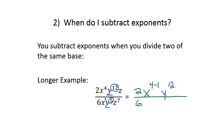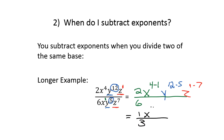That gives y to the twelve minus five. For z, we have z to the first on top and z to the seventh on the bottom — if no exponent is written it's a one — giving z to the one minus seven. The final answer: reducing two and six gives one third. X to the four minus one is x to the third. Y to the twelve minus five is y to the seventh. Z to the one minus seven is z to the negative six.